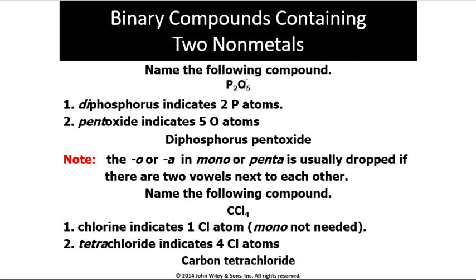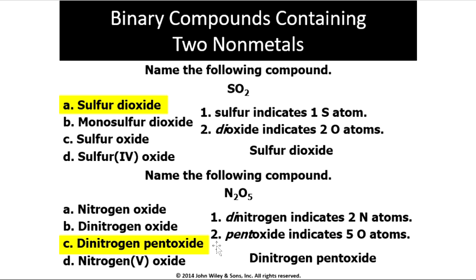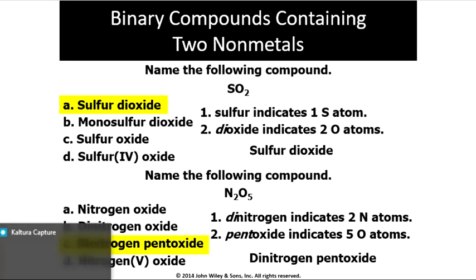Final examples: P2O5 — first name phosphorus, second plus -IDE gives oxide, di for two phosphorus, penta for five oxygens — diphosphorus pentoxide. CCl4 — carbon, chlorine plus -IDE gives chloride, one carbon (no mono), four means tetra — carbon tetrachloride. SO2 — sulfur dioxide. N2O5 — dinitrogen pentoxide. It's super easy — hope you've learned the covalent compound naming rule. Thank you for watching.